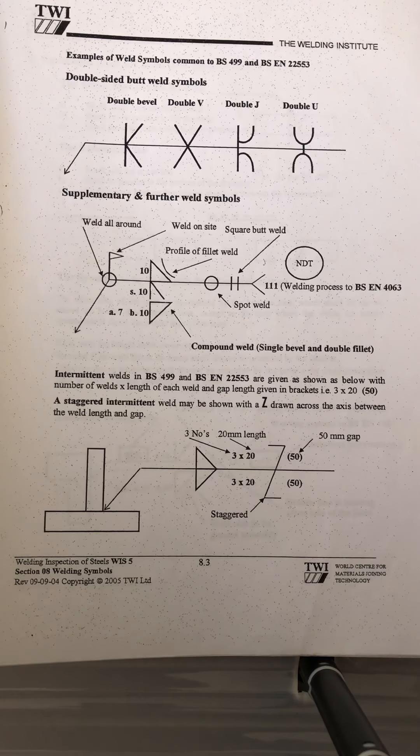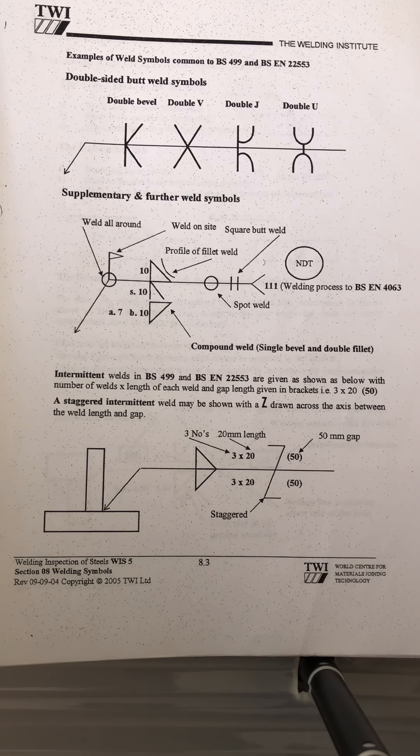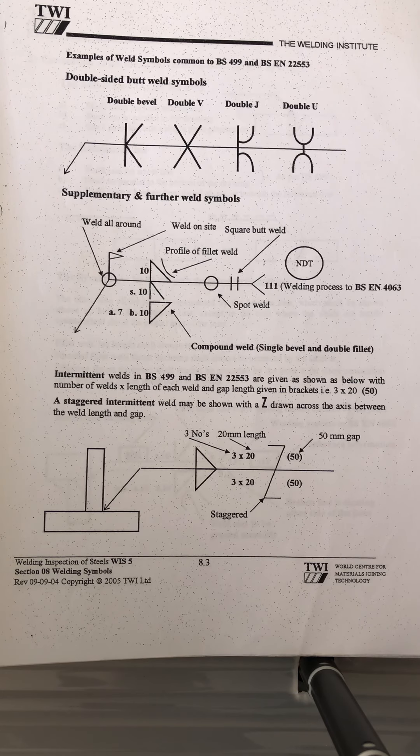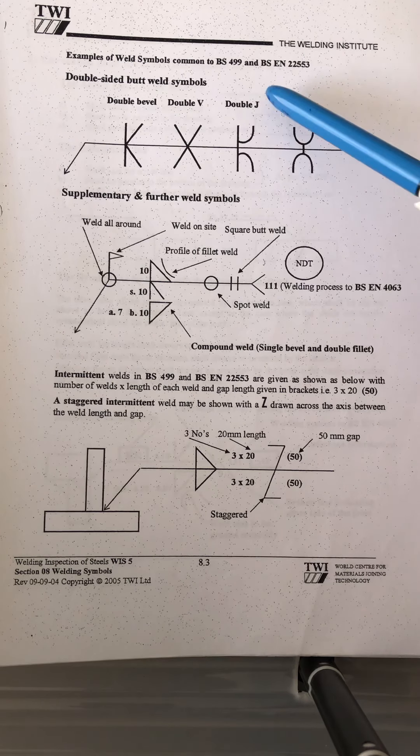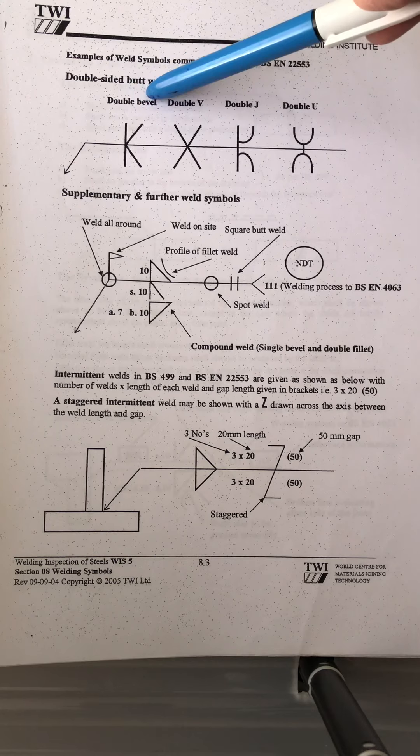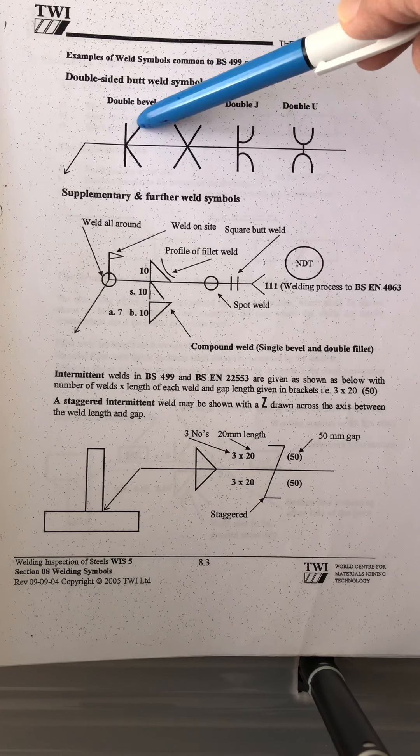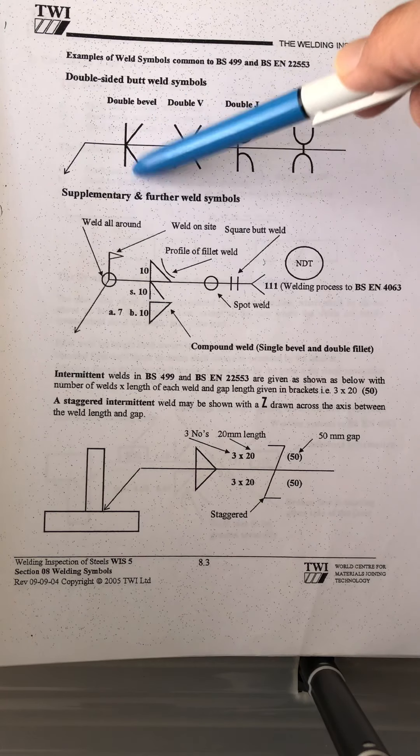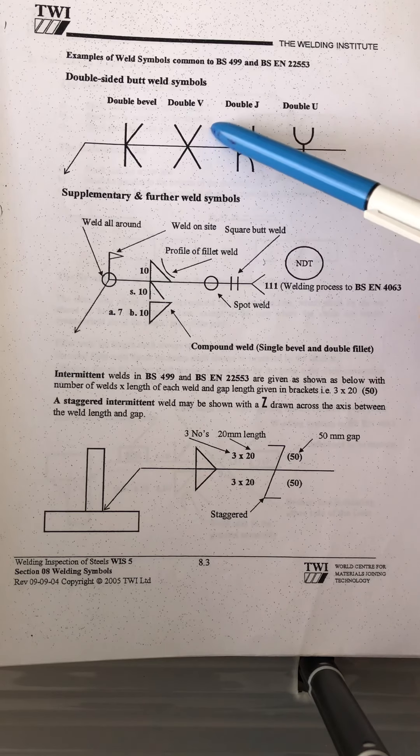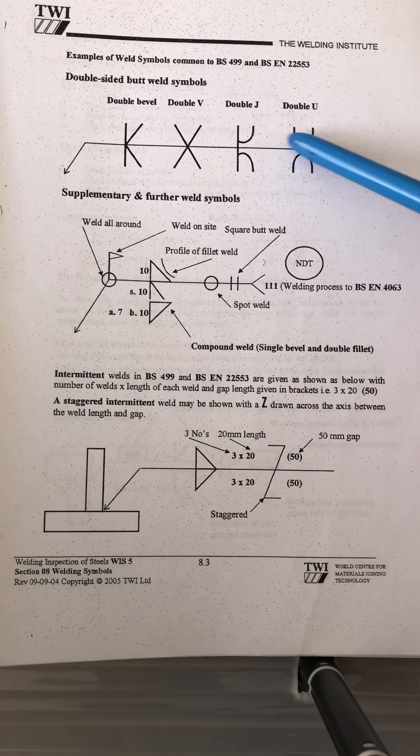These are some of the welding symbols. This one is double bevel because there's only half bevel, so one bevel here, one bevel here. Double B, double J, and V.